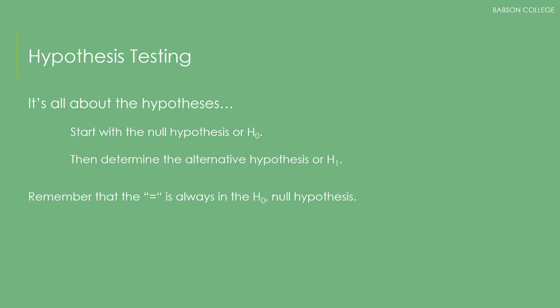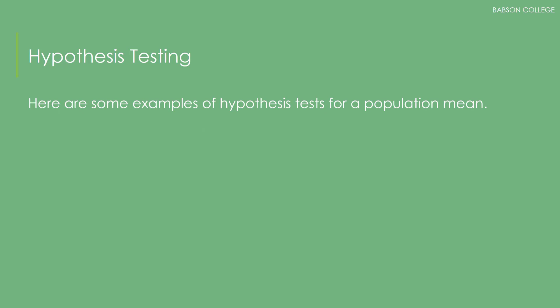Remember, the equal sign is always in the null hypothesis. Here are some examples of hypothesis tests for a population mean. Notice we start with the equal to and not-equal-to signs — this is a two-sided test. That is, we're interested in either the population mean being higher or lower than our value.